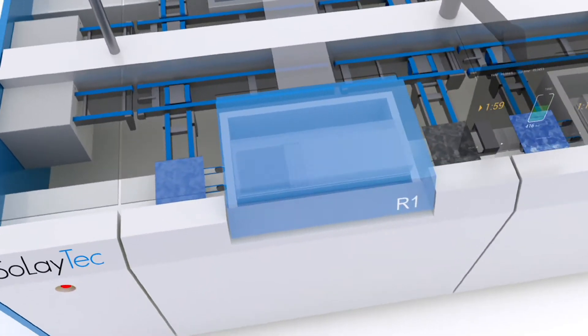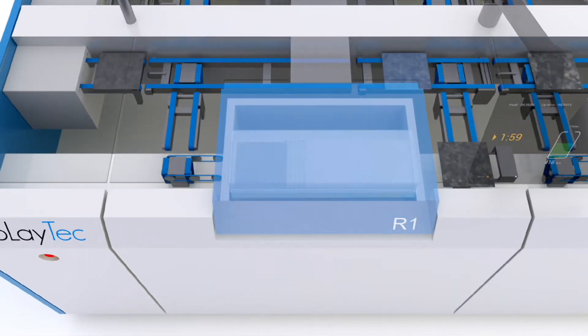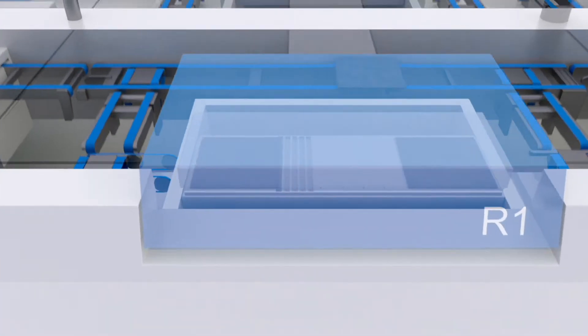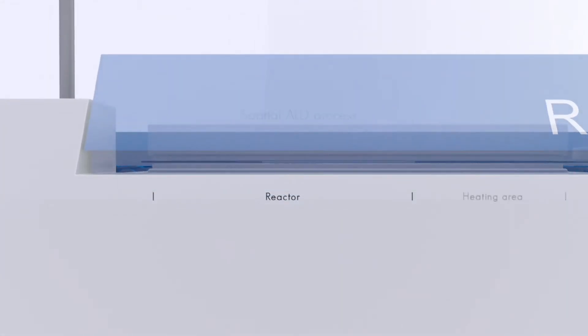Two main conveyors distribute the wafers over the multiple deposition units. Wafers are transported using the double floating principle, so as to avoid any mechanical contact. After entering the deposition unit, the wafers are heated to process temperature.